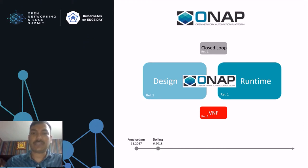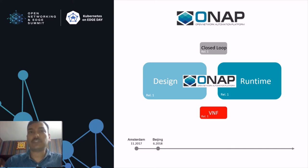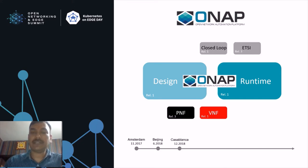Before we start, I wanted to give a brief on how the ONAP journey has been so far. ONAP was initially incubated in 2017 as the Amsterdam release, which was a combination of two open source projects — OpenEComp and OpenO. This gave us a platform with design time, runtime, and closed loop interactions of VNFs. Then came the third release, the Casablanca release, which was vital because it introduced PNF orchestration capability in ONAP, along with a major breakthrough: ETSI standard alignment within ONAP.